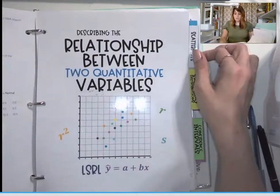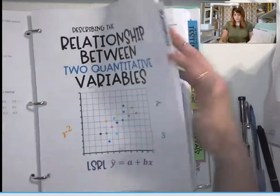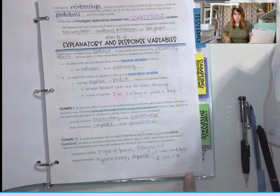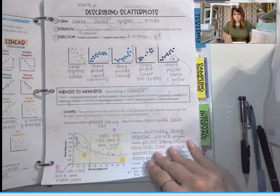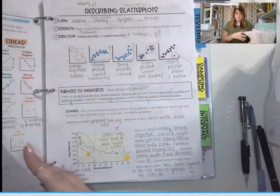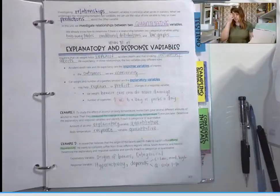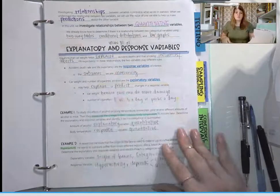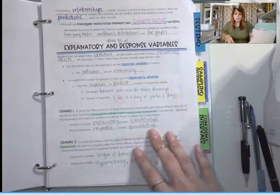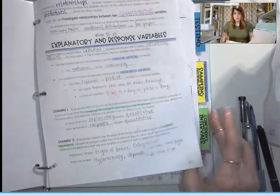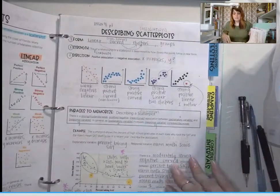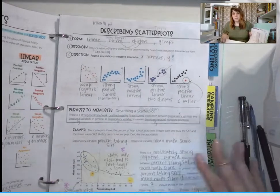The next unit was scatter plots, Unit 4. This is where I started numbering for you. It starts on page 401. I'll tell you the lesson numbers, but I'm not as concerned that you write them down. Explanatory and response is lesson 41 part 1. Scatter plots is lesson 41 part 2, and describing scatter plots is the same lesson but part 3.